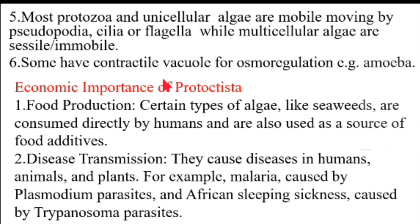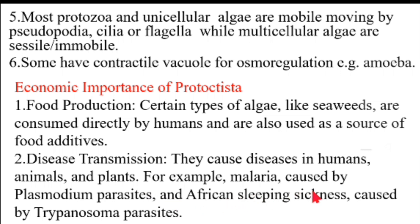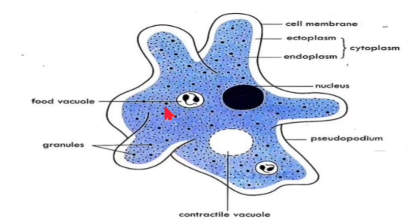Now, the economic importance of Kingdom Protoctista — when discussing economic importance you must cover both positive and negative aspects. Number one: food production — certain types of algae like seaweeds are consumed directly by humans and are also used as food additives. Number two: they transmit diseases in humans, animals, and plants. A good example is malaria, caused by Plasmodium, a parasite. We also have African sleeping sickness, which is caused by Trypanosoma parasites.